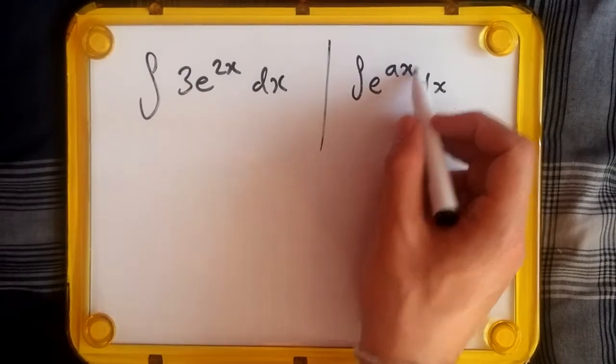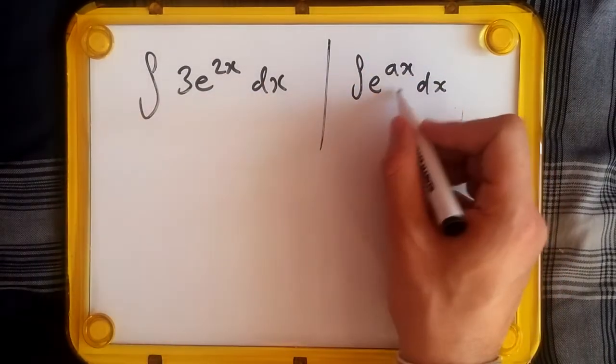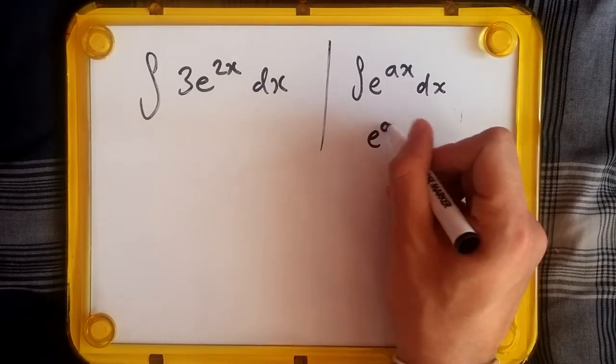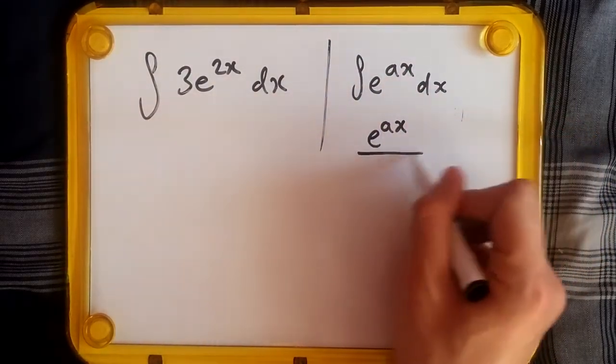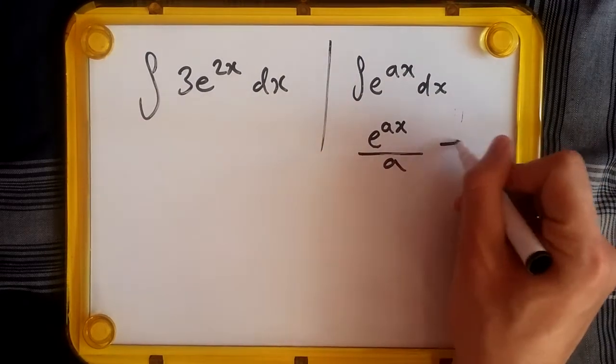For example, this will still be itself, e^ax. And because we have a, to differentiate ax will give us a, so divide this over a, and of course plus c.